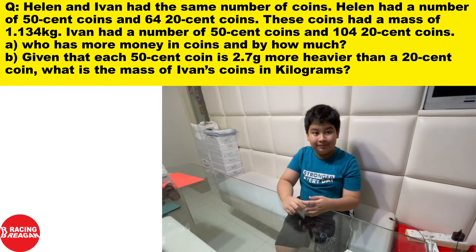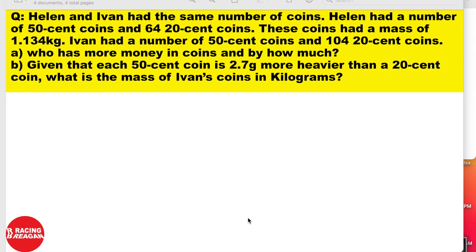Anyway, let's get right into the video. Helen and Ivan had the same number of coins. Helen had a number of 50-cent coins and 64 twenty-cent coins. These coins had a mass of 1.134 kg. Ivan had a number of 50-cent coins and 104 twenty-cent coins. Part A: who has more money in coins and by how much? Part B: given that each 50-cent coin is 2.7 grams heavier than a 20-cent coin, what is the mass of Ivan's coins in kilograms?